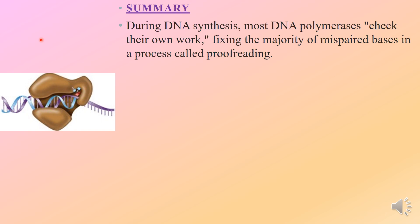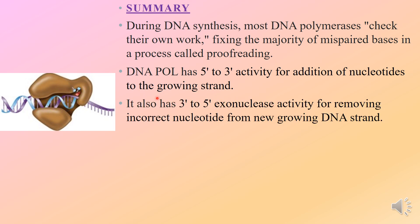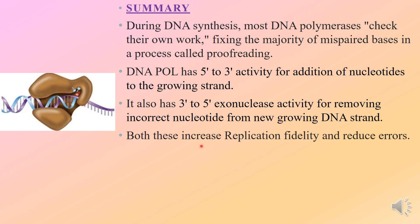In summary: during DNA synthesis, most DNA polymerases check their work and fix the majority of mispaired bases in a process called proofreading. DNA polymerase has 5' to 3' activity for addition of nucleotides to the growing strand, and it also has 3' to 5' exonuclease activity for removing incorrect nucleotides from the new growing DNA strand. Both activities increase replication fidelity and reduce errors.